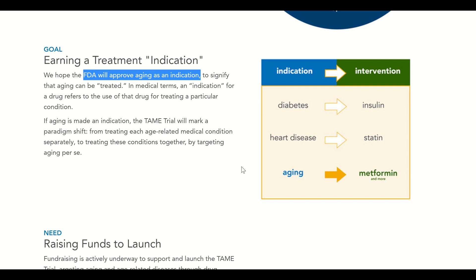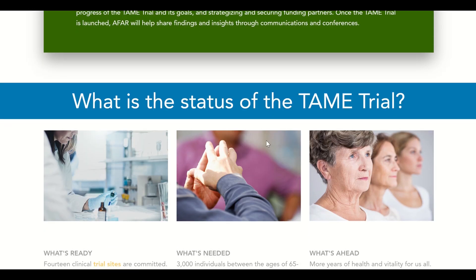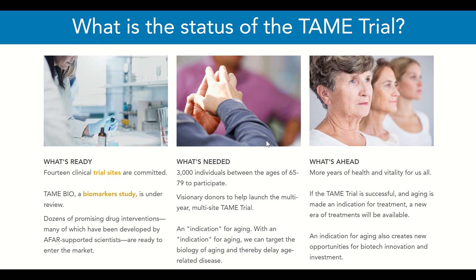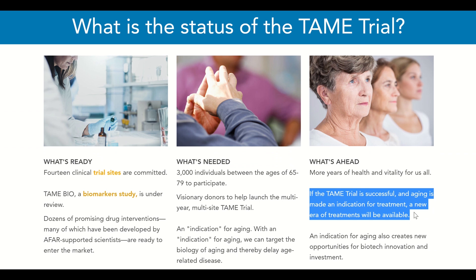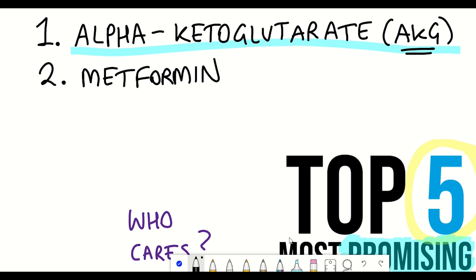Now the cool thing with this trial is that they hope the FDA will actually approve aging as an indication to signify that aging can be treated. So that's the idea that drugs can be used to target aging itself as opposed to treating age-related diseases. However, the trial hasn't started yet, but they do have their 14 clinical trial sites committed. And interestingly, they are working on a biomarker study. But as they state on their website, if this TAME trial is successful and aging is made an indication for treatment, a new era of treatment will be available. So for those reasons, that's definitely why metformin is on my list.